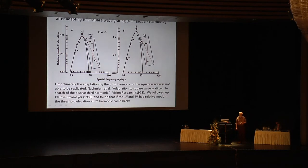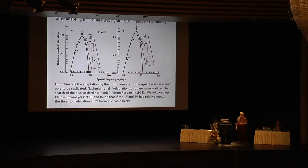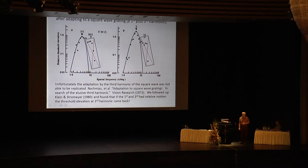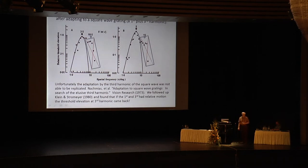When they started doing this with signal detection theory, this extra threshold elevation disappeared — there was no adaptation to the third harmonic. Something else was going on. This was the beginning of abandoning the method of constant stimuli and using much more careful methods. That's going to be one of the themes of this talk: one has to be very careful when doing certain kinds of psychophysics.